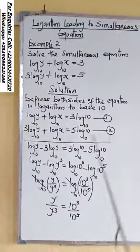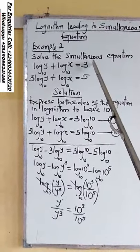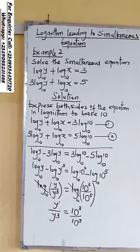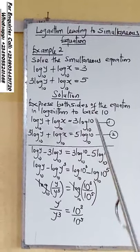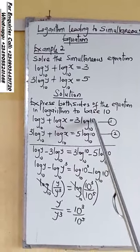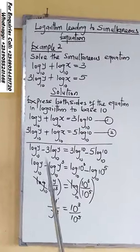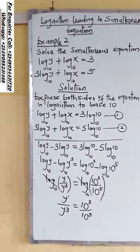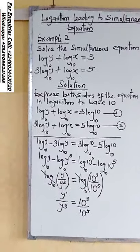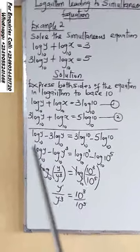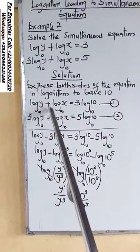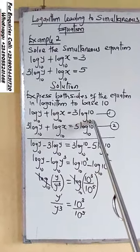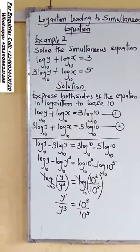Before you solve, you are going to convert 3 and 5 to base 10. A very simple way to do it is to attach log 10 base 10 at the front, since the base of the other values are in 10. So it will give us log y plus log x equals to 3 log 10 base 10. Remember, log 10 base 10 is 1.